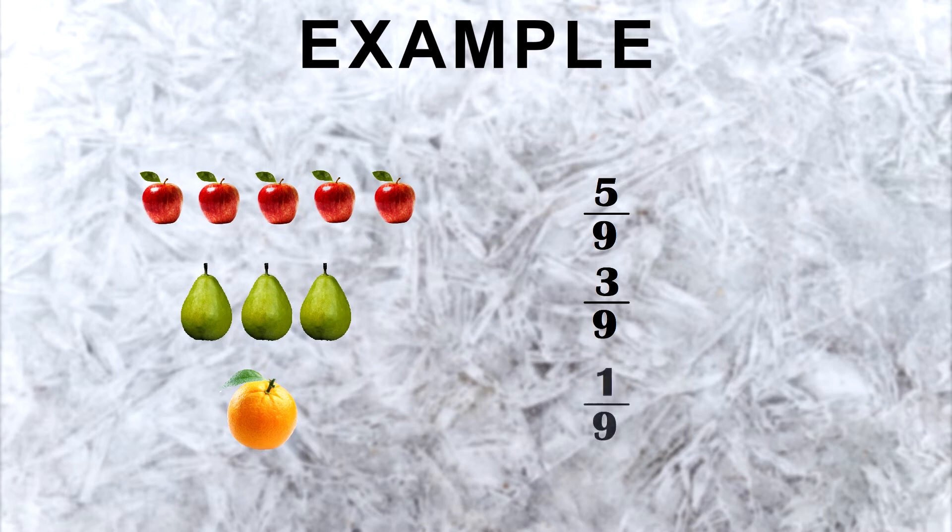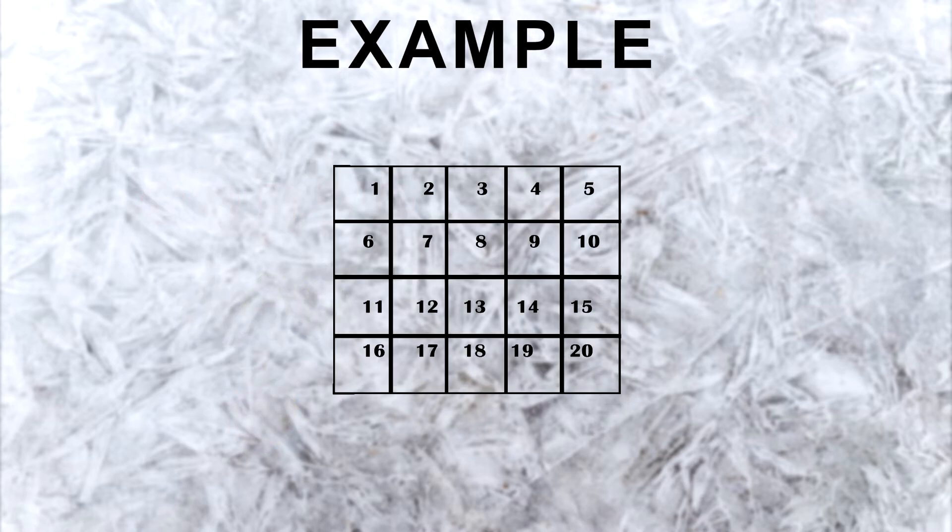Let's see another example. In a maths test there are 20 questions on the test and you get 17 of those questions correct. That means you got 17 over 20 or 17 twentieths of the questions right.